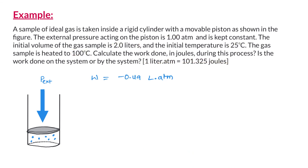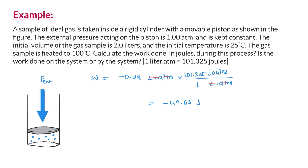Let us now convert liter·atm into joules. The conversion factor is already given: 1 liter·atm equals 101.325 joules. Multiplying minus 0.49 liter·atm by 101.325 joules per liter·atm, we get work done equals approximately minus 49.65 joules.